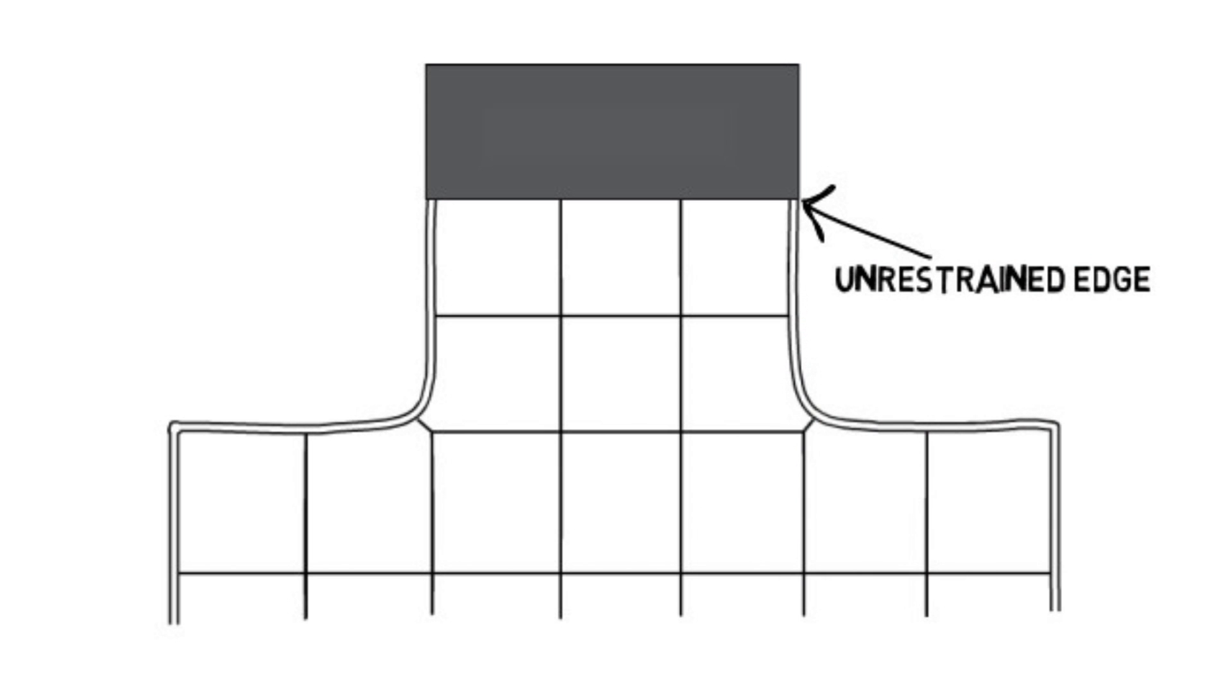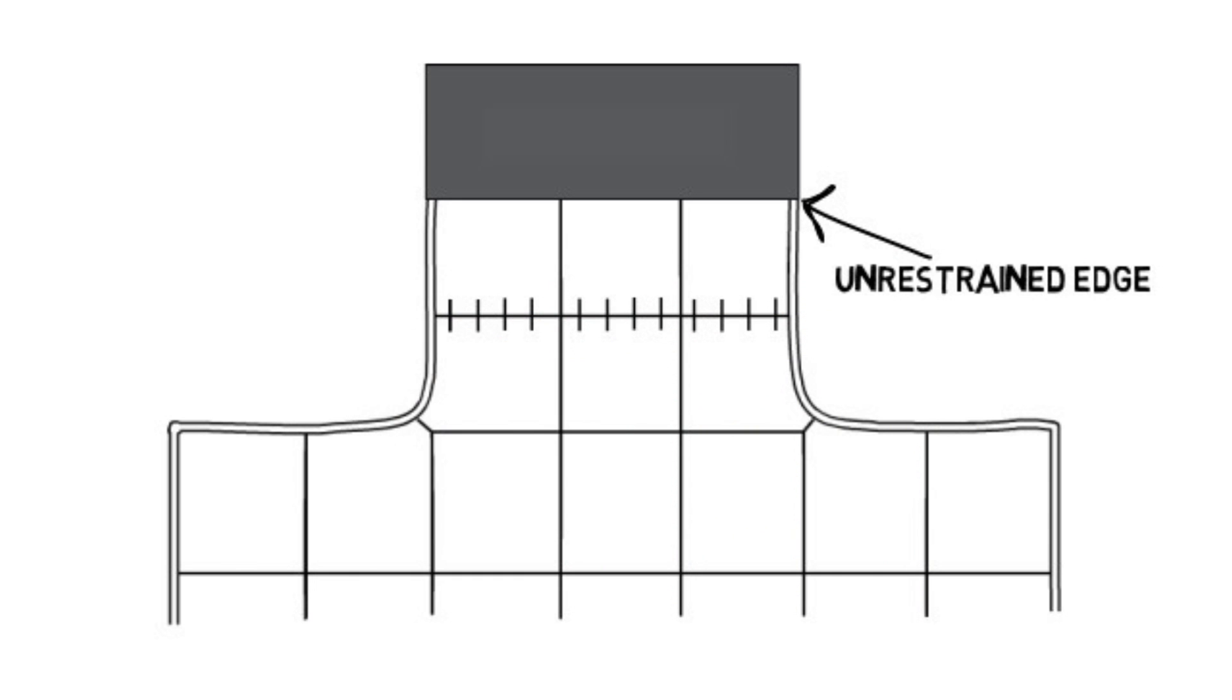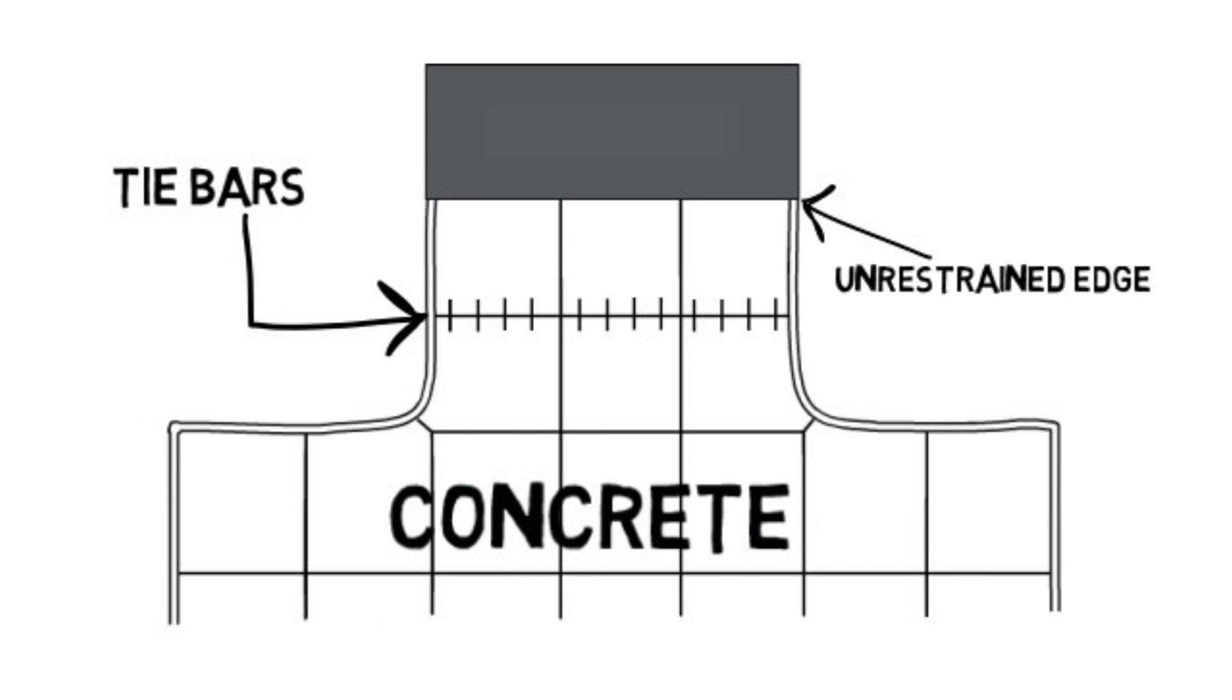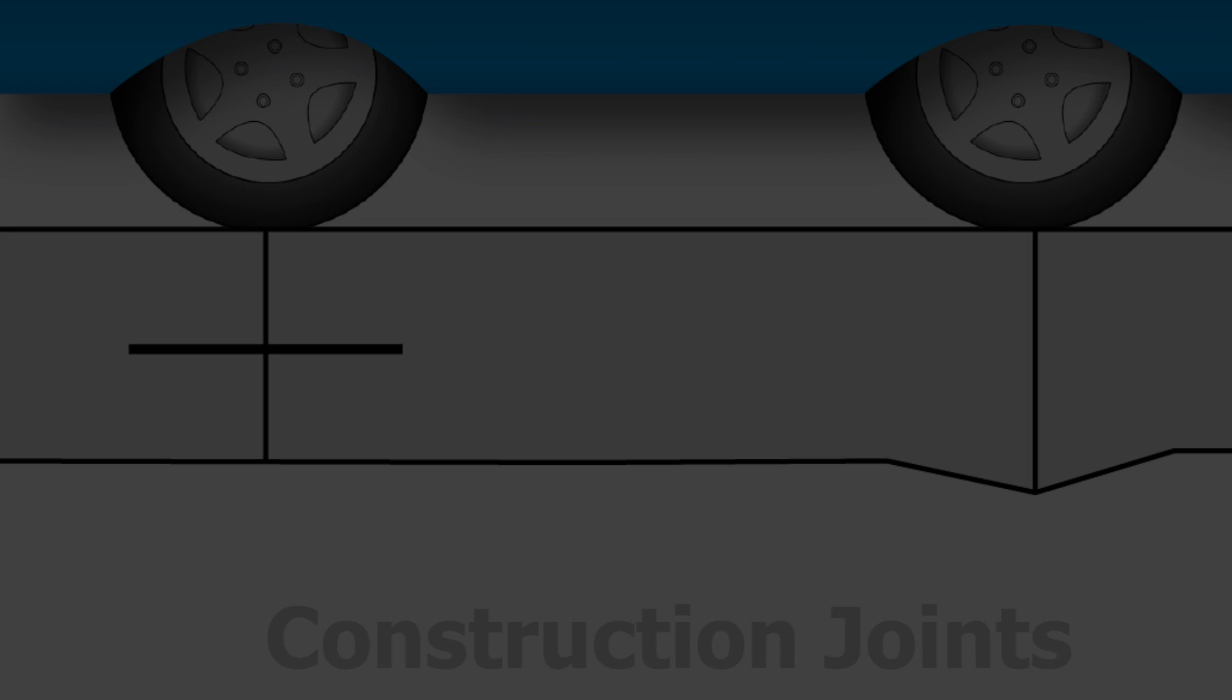For unrestrained edges, tie bars should be used in the first joint from the slab edge to avoid the risk of the panel becoming separated from the slab. To be safe, abutting asphalt should be considered an unrestrained edge. Unrestrained edges should be thickened to help with load bearing.